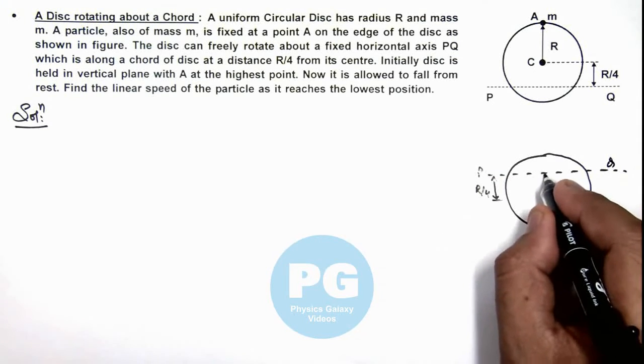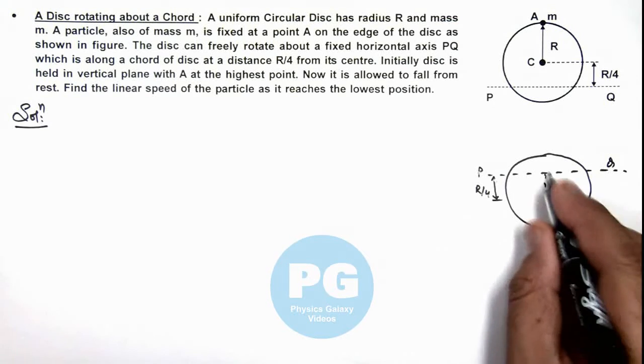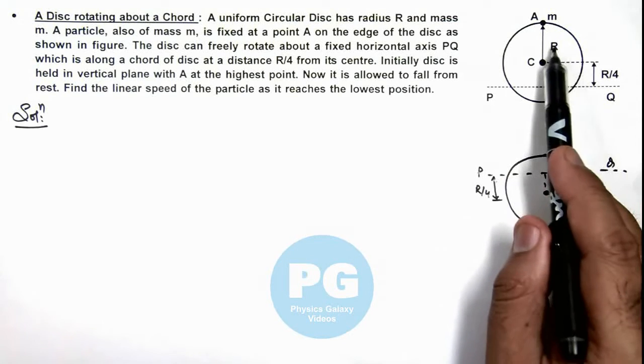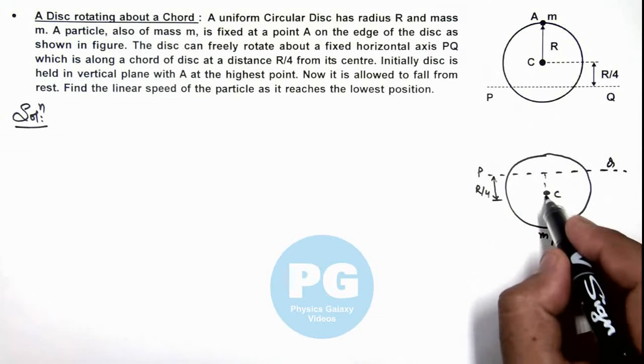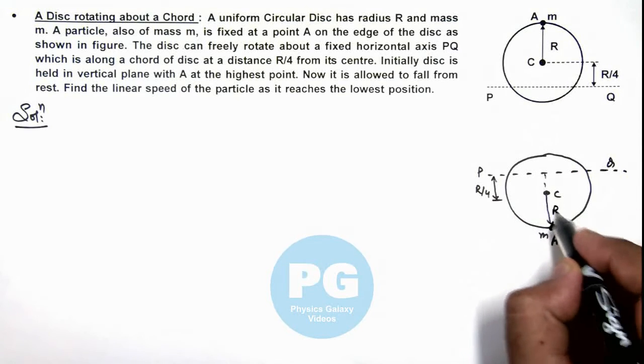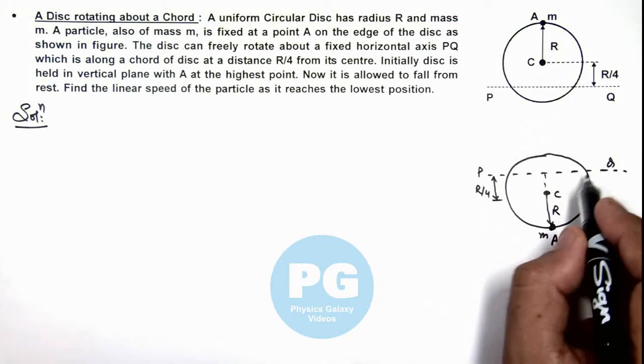So in this situation, this mass which is fixed at point A will also fall down by a distance twice of R plus R by 4, as now it is at a distance R plus R by 4 below the chord PQ, as about this chord it is rotating.